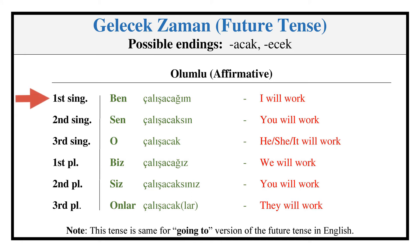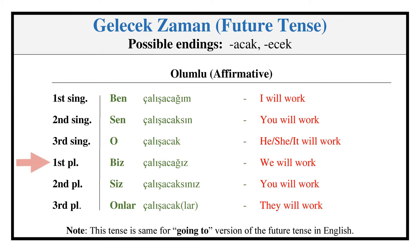Future Tense — Affirmative: ÇALIŞACAĞIM, ÇALIŞACAKSIN, ÇALIŞACAK, ÇALIŞACAĞIZ, ÇALIŞACAKSINIZ, ÇALIŞACAKLAR.